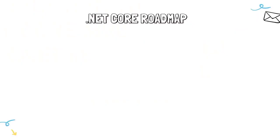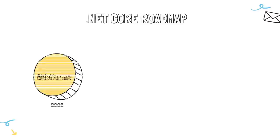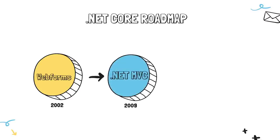In this video, I want to walk you through the journey of .NET Core. .NET Core is probably the biggest change that the .NET language has encountered. In 2002, Microsoft introduced Web Forms, which was a revolution at that time. Web Forms had its drawbacks, and there was a need to overcome them. Because of that, the .NET team came up with a new architecture — .NET MVC.